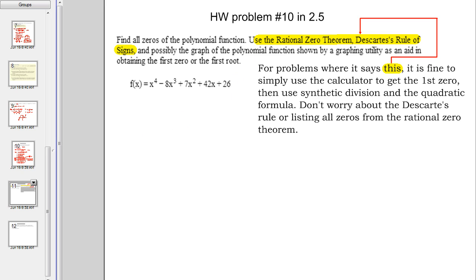So we're going to set up synthetic division with negative one as the zero. So there's the setup and now I just go through the process of synthetic division. So there's what I come up with. Remember, we started with x to the fourth. So that means this is one x cubed minus nine x squared plus 16x plus 26 remainder of zero. So this is a degree three polynomial.